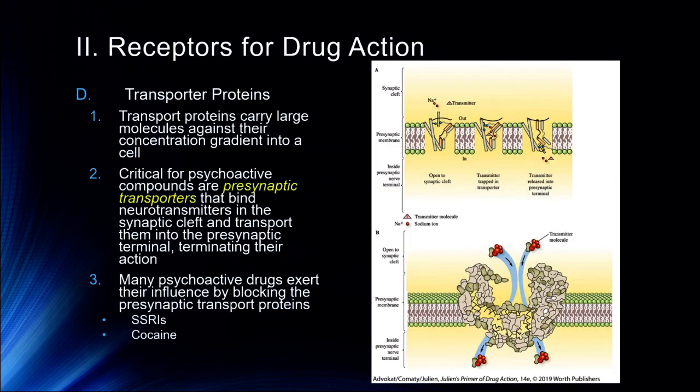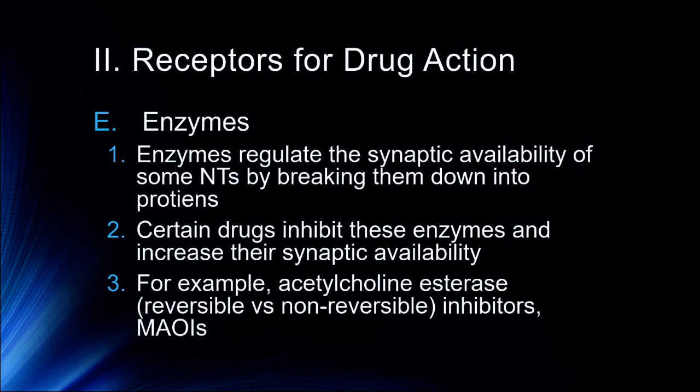We can see this schematically: the transporter protein brings the transmitter back into the cell, and these can be blocked by specific drugs. Finally, enzymes in the synapse regulate synaptic availability of neurotransmitters by breaking them down into their constituent components. The biggest examples include acetylcholinesterase and monoamine oxidase (MAO). Drugs that inhibit these enzymes increase synaptic availability — MAOIs increase the synaptic availability of dopamine, and acetylcholinesterase inhibitors increase the synaptic availability of acetylcholine.